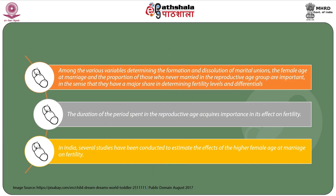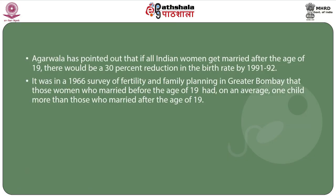The duration of the period spent in the reproductive age acquires importance in its effect on fertility. In India, several studies have been conducted to estimate the effects of higher female age at marriage on fertility. Agarwala pointed out that if all Indian women got married after the age of 19, there would be a 30 percent reduction in the birth rate by 1991–92. A 1966 survey of fertility and family planning in Greater Mumbai found that women who married before the age of 19 had on average one child more than those who married after the age of 19.